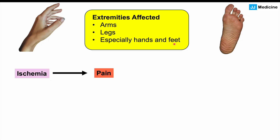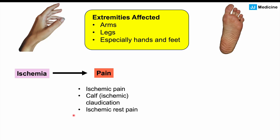This ischemic pain will occur initially when utilizing your hands, feet, arms, or legs. We can often see calf claudication — pain in the calves when walking — and also pain in the arch of the foot. Eventually as time progresses, the pain can worsen and the condition can progress to ischemic rest pain, where even without being active, the patient has pain at rest.